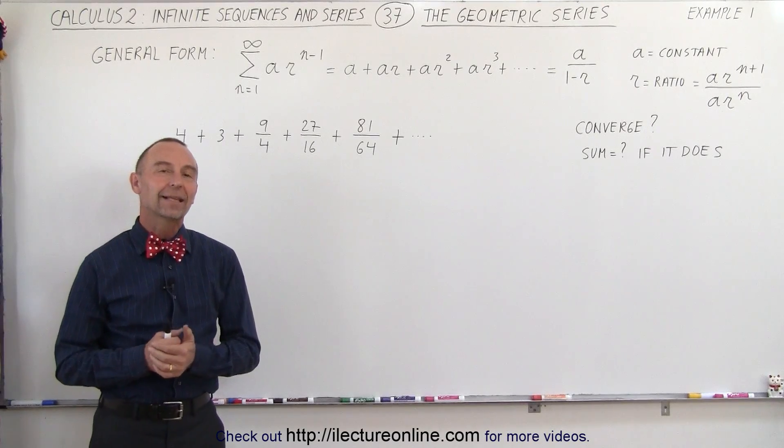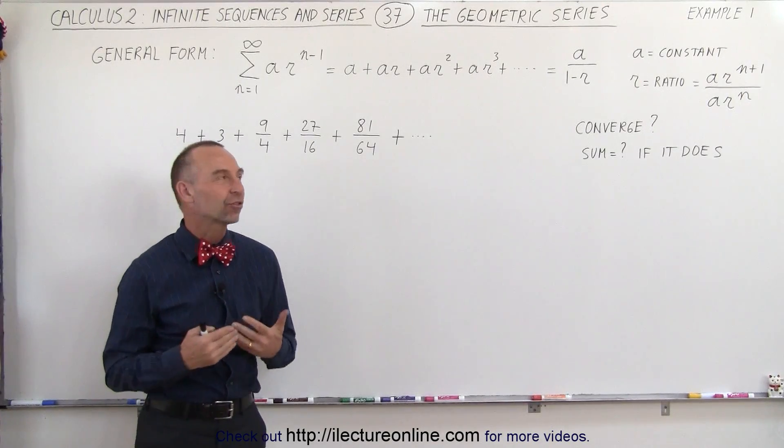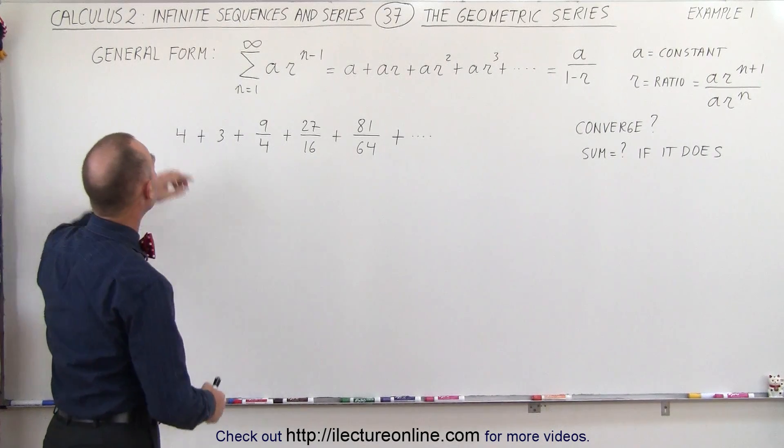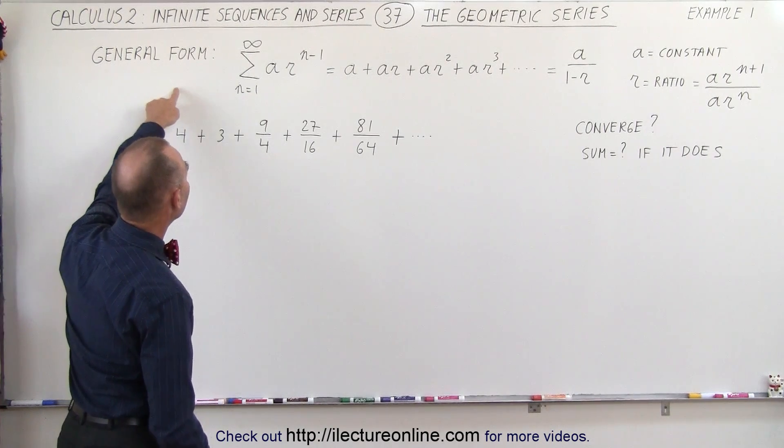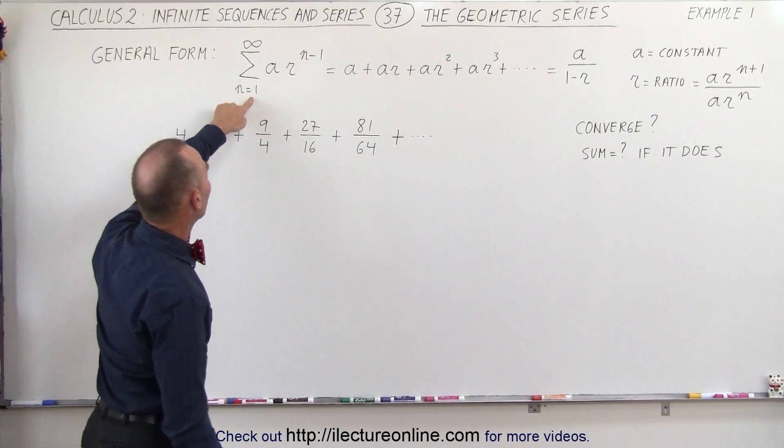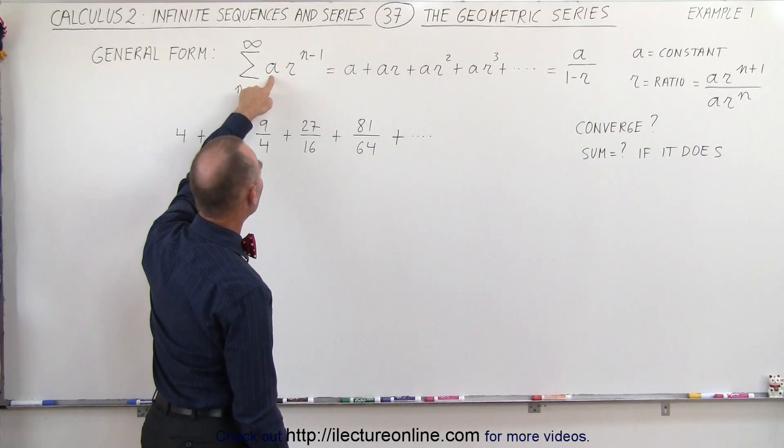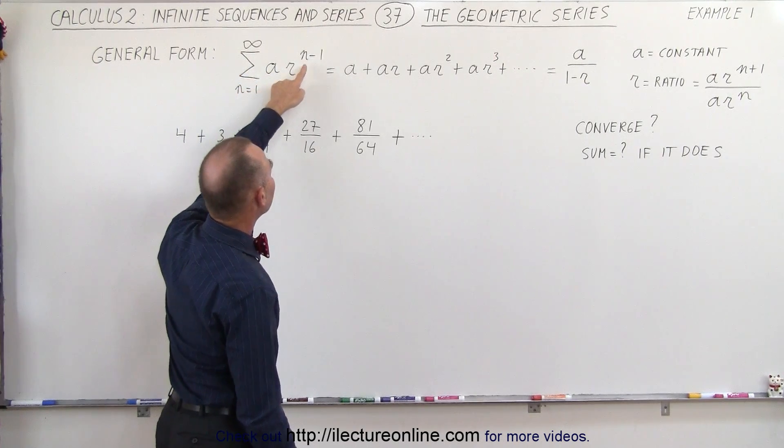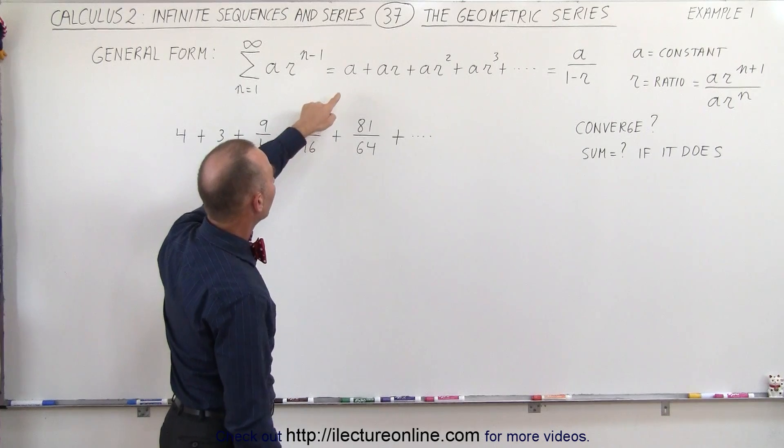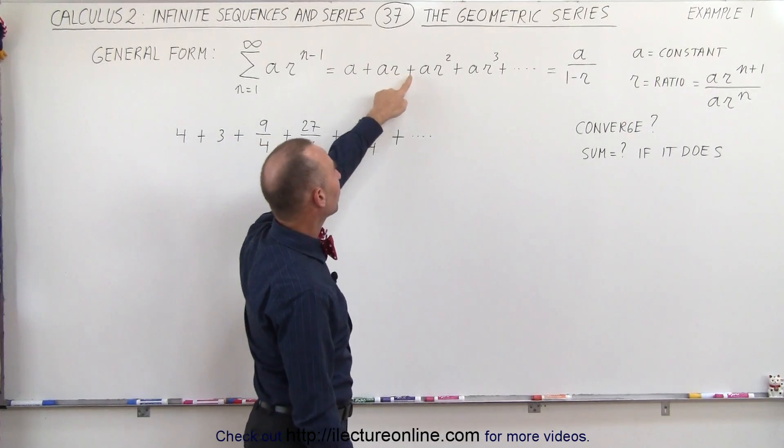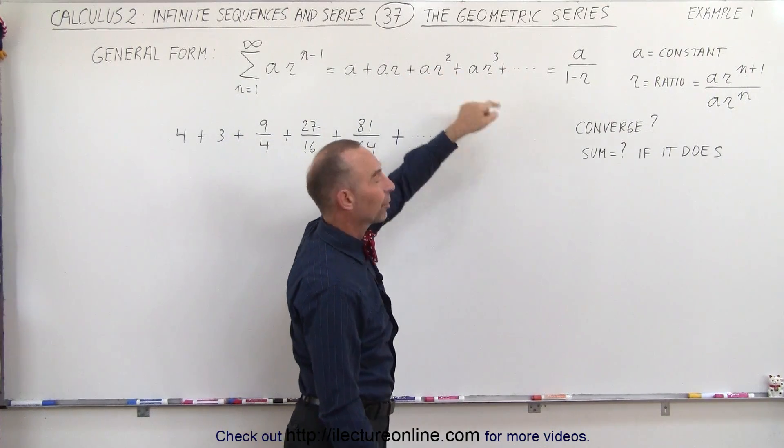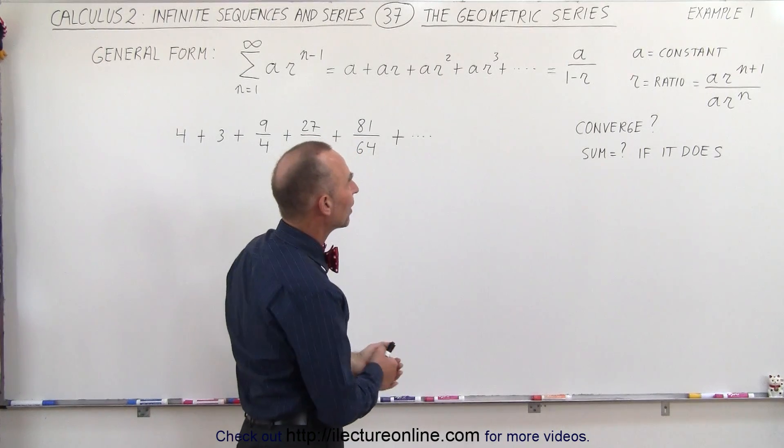Welcome to ElectronLine. Now let's see how we test the geometric series. Remember, the general form of the geometric series is the infinite sum from n equals 1 to infinity of some constant a times r raised to the n minus 1. For example, a plus a times r plus a times r squared plus a times r cubed and so forth, so you can see the trend.